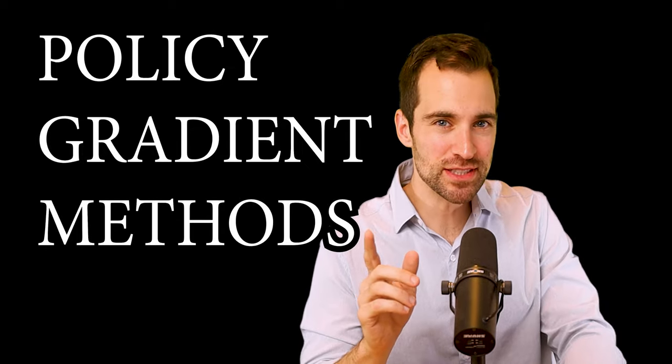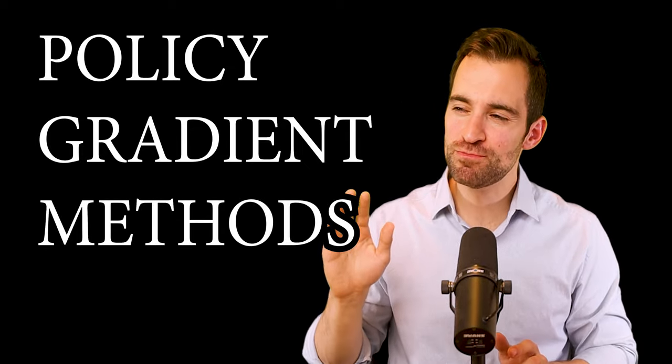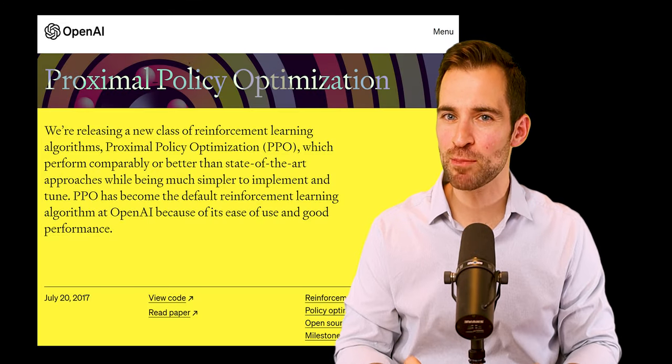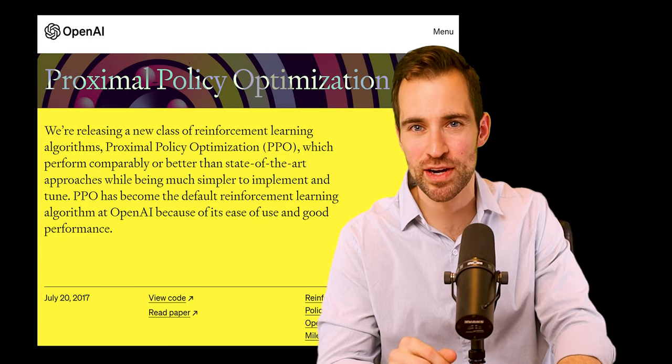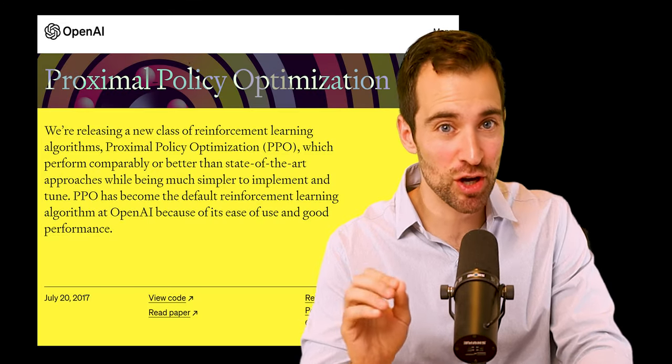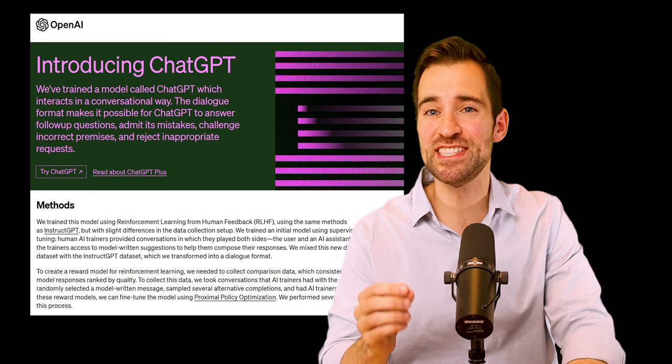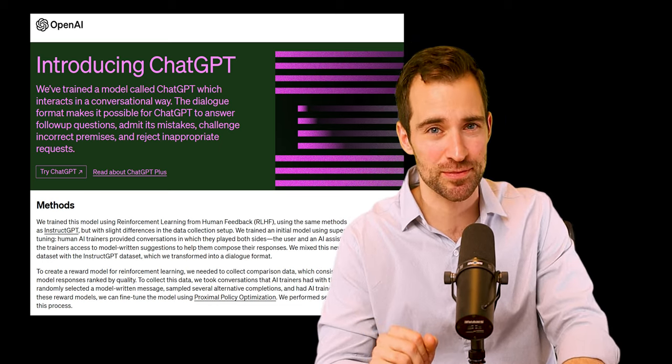No course on reinforcement learning would be complete without a discussion of policy gradient methods. These techniques take a more direct approach to the problem statement of RL. As a result, many of the most effective models are from this category. For example, proximal policy optimization is a type of policy gradient method, and that's OpenAI's go-to RL algorithm. In fact, that's what they use to incorporate human feedback into ChatGPT's training. Considering how much that product has grown, it's pretty clear these techniques have serious real-world value.